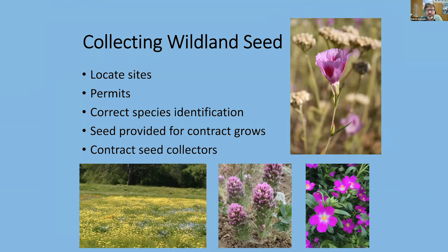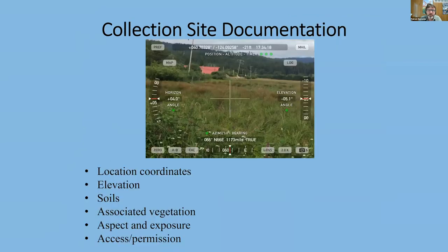Producing seed of known genetic origin starts with a collection of wildland seed, and that's one of the main limiting factors. It can be very difficult to locate sites with abundant seed, permits can be required, and you need to make sure you've properly identified the species — we work with UC Davis herbarium quite a bit for that. Some seed comes through contract grows where clients provide seed for increases on specific projects. We also use professional contract seed collectors. Collection site documentation is really important — at minimum, the coordinate location, but aspect and elevation can certainly influence the seed, so additional data on soils and associated vegetation can make a real difference.